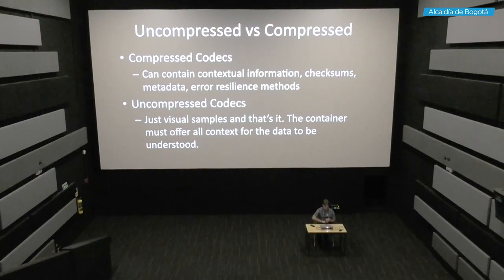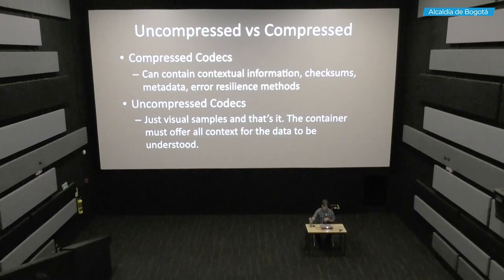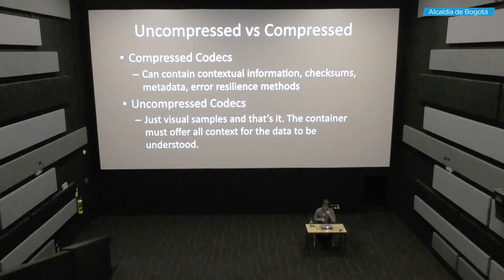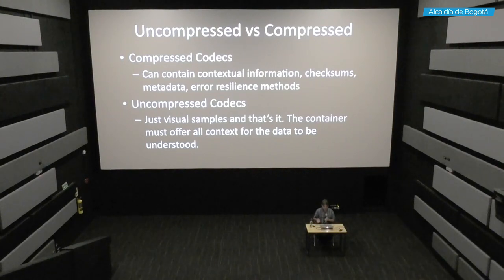I want to talk about the differences between uncompressed and compressed video data, because archives often have very limited resources for storing the resulting data of a digitization project. When we store uncompressed, it's bigger but very accurate and very simple. Compressed uses less data and is more efficient but a little more complicated. One of the differences is that a compressed video codec will typically contain contextual information about itself, also checksums, metadata, and methods to support error resilience — if the data becomes damaged, it will contain mechanisms to help conceal the damage. Whereas uncompressed is very simple: just the pixels and pixel data, with no context, no error resilience, no metadata, no checksums.